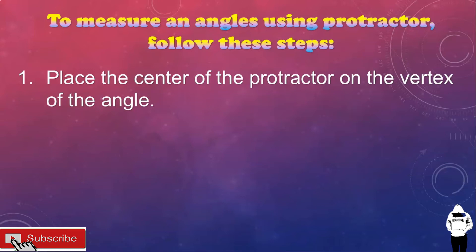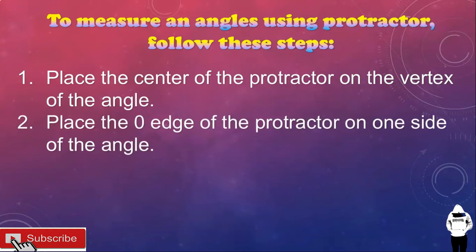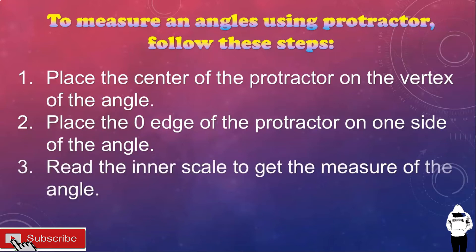First, place the center of the protractor on the vertex of the angle. Second, place the zero edge of the protractor on one side of the angle. Third, read the inner scale to get the measure of the angle. So, ayan po yung steps po kung paano gamitin po yung protractor to measure an angle.